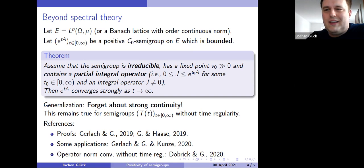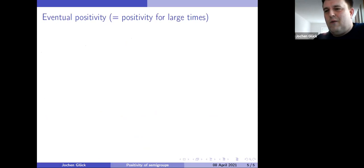Namely, we were discussing positive semi-groups all the time. Now here's something strange, but you might have heard the word already on this conference. Eventual positivity, which is in other words, positivity for large times. Now, what the hell is this? Strange things do happen. I have an example for you.